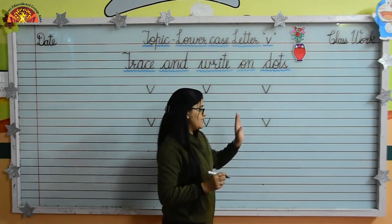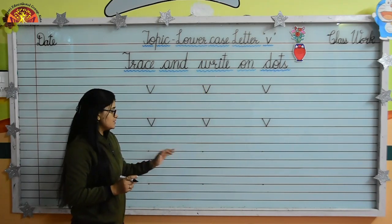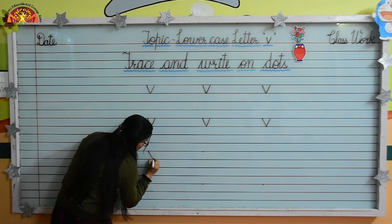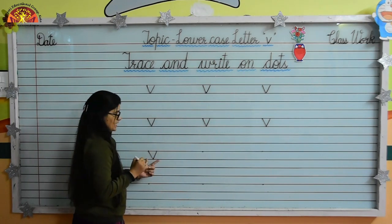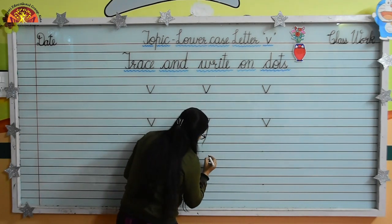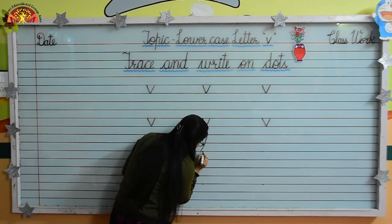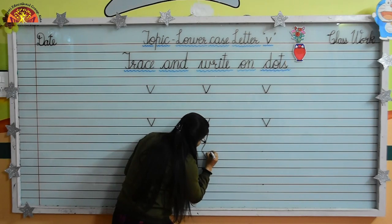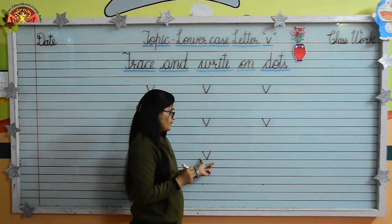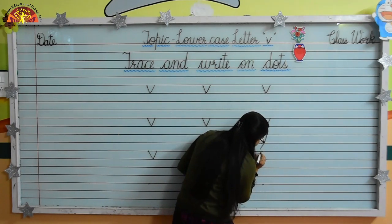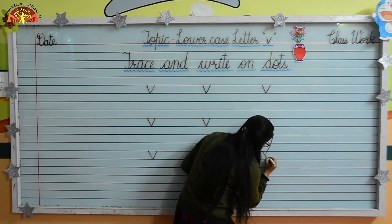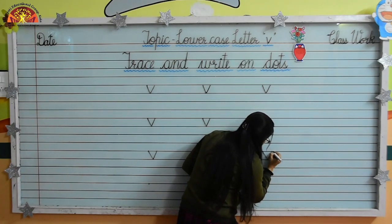V for vase. Now we will write lowercase letter V on dots. So put your pencil here on dot and draw a slanting line like this. Now from this point we will draw a slanting line like this, and one more slanting line like this. Lowercase letter V. Do it again — draw a slanting line and from this point one more slanting line like this. Lowercase letter V.